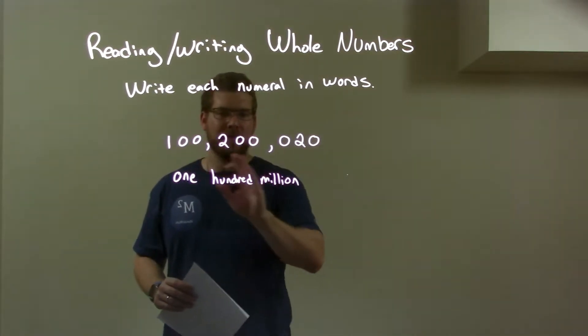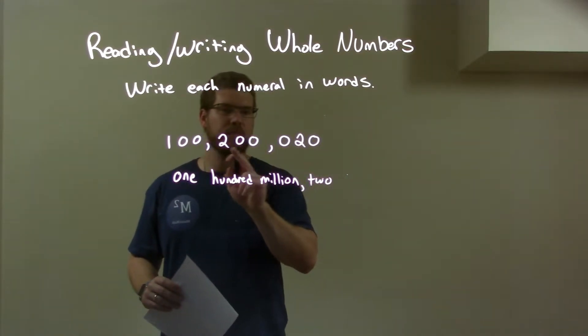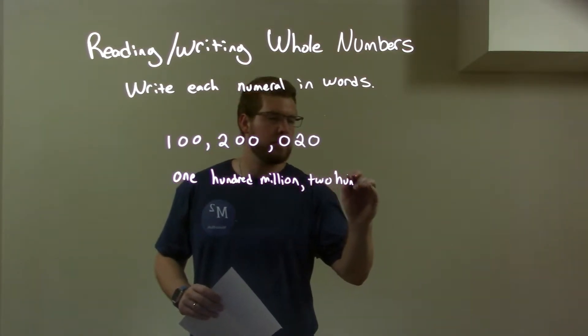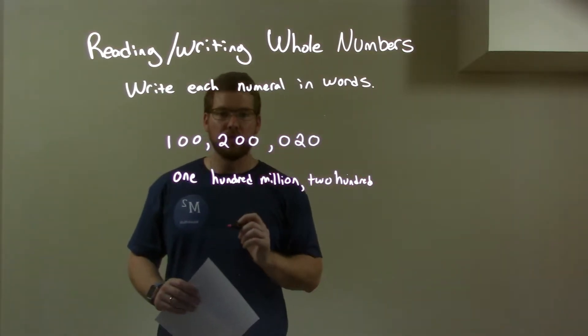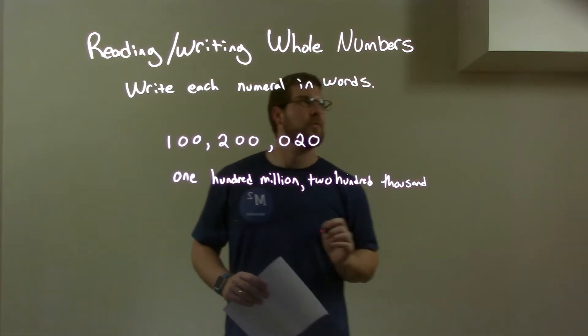Now, we have in this middle section here, a 2. So, 2. But again, that's 200. And this is in the thousand section. Thousand. Two hundred thousand.